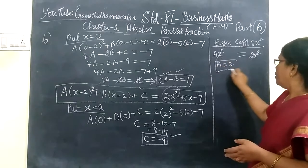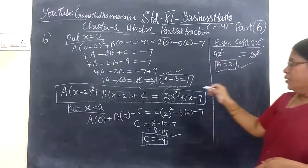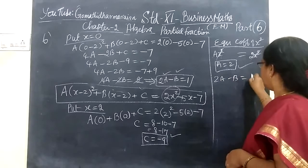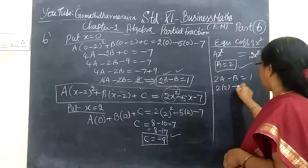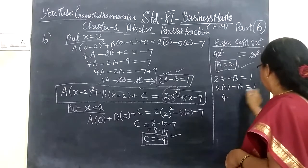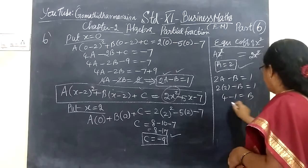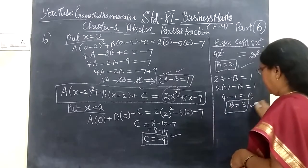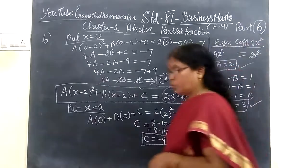Now you have found the value of A. You will substitute, so 2A minus B equal to 1. So 2 divided by 2 minus B equal to 1. So 4 is the value of minus B. Therefore B value 3. So B is 3, C minus 9 is 2.